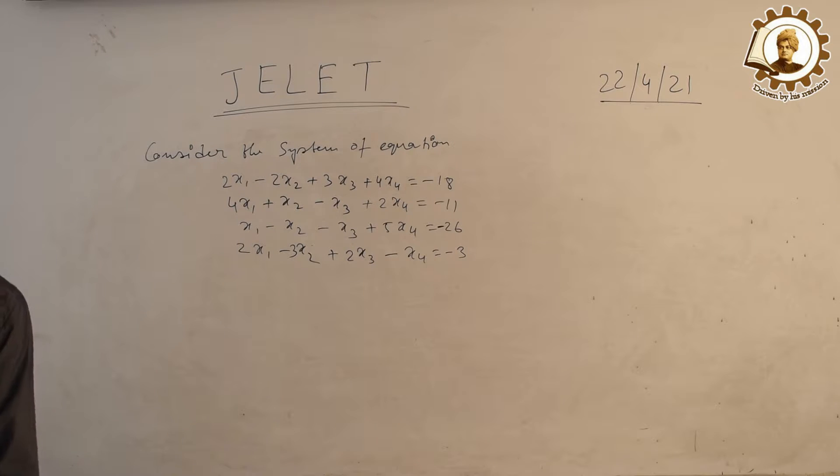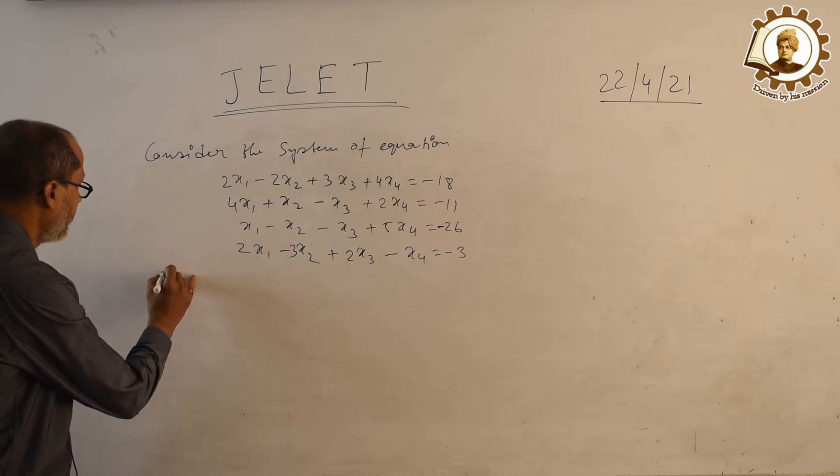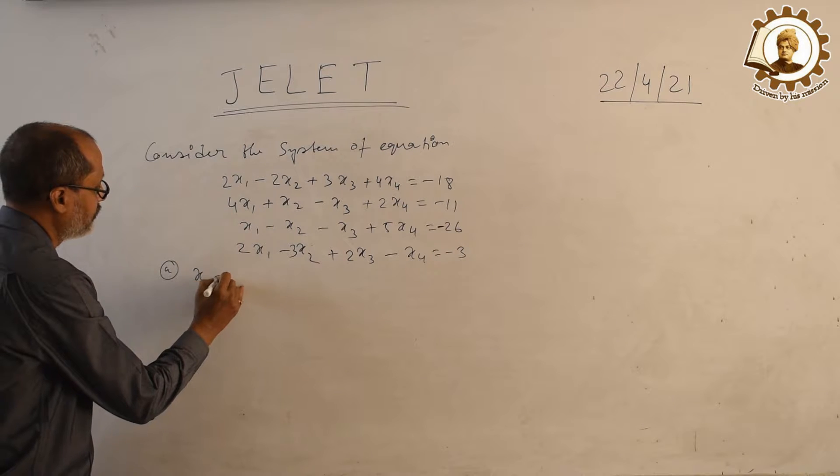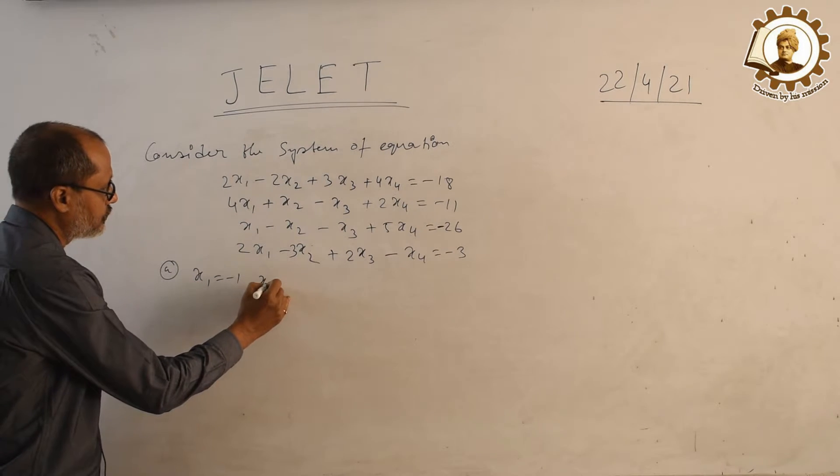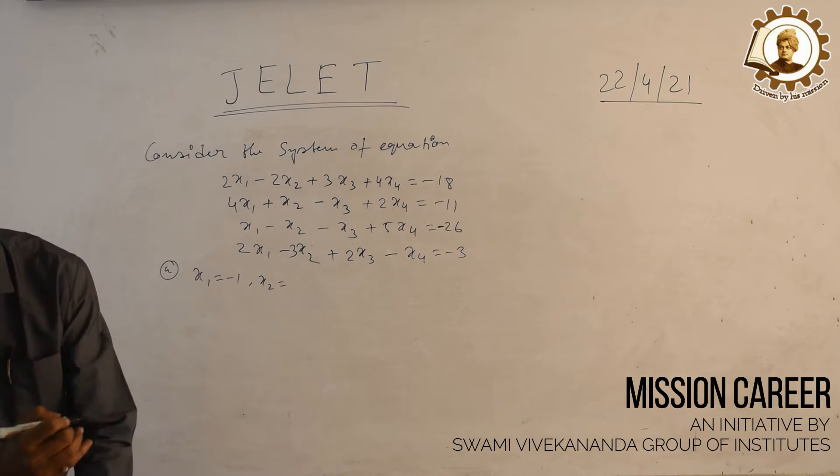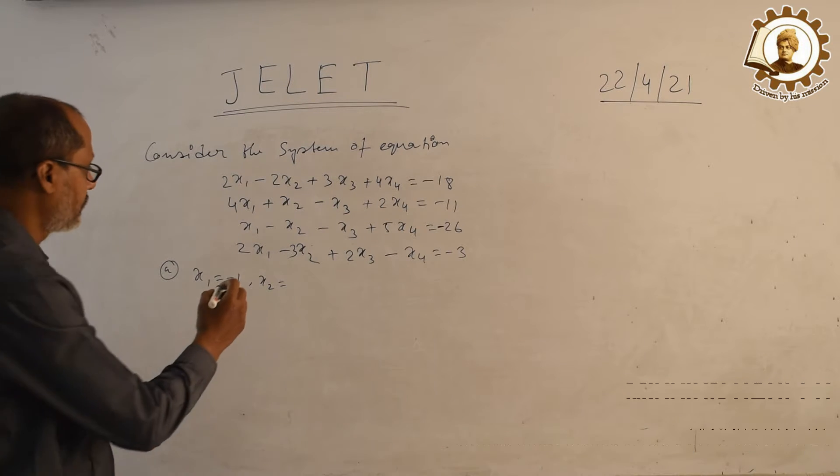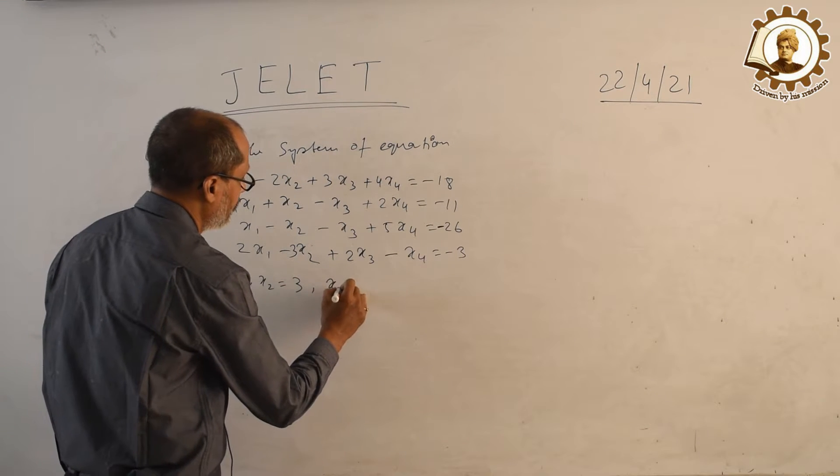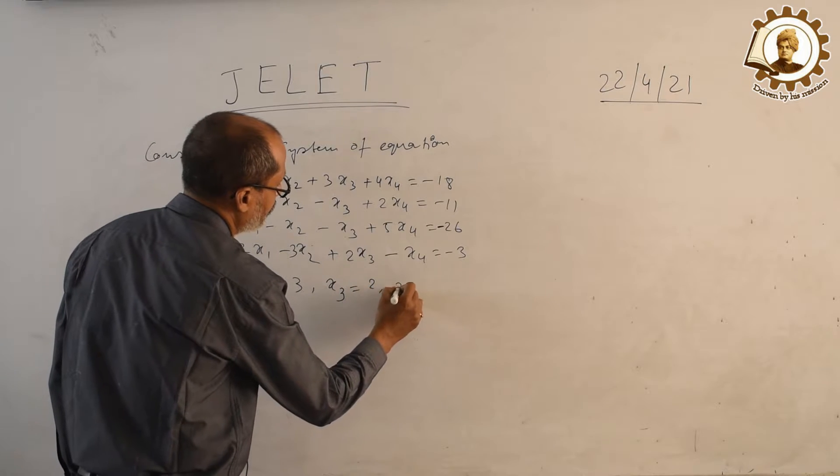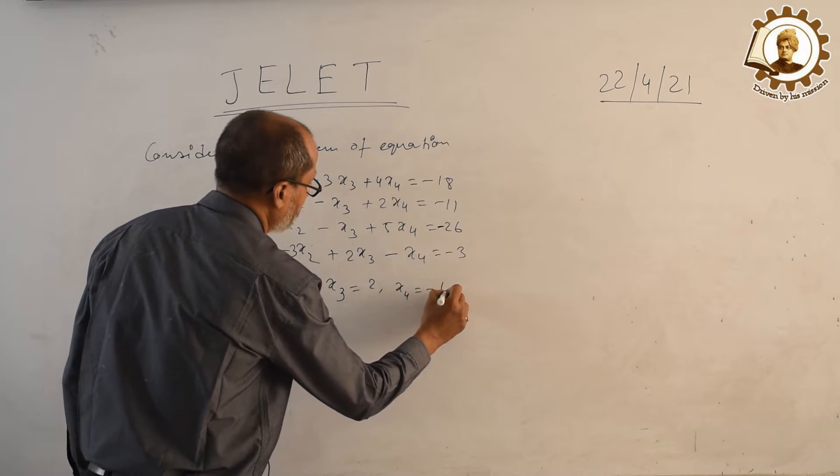And we have 4 options. Option A: x1 equals minus 1, x2 equals 3, x3 equals 2, x4 equals minus 4.